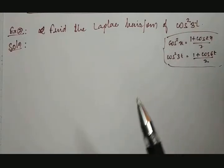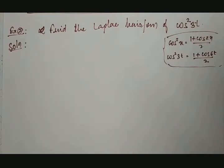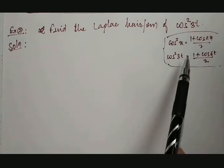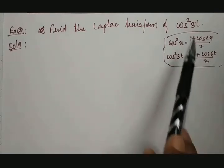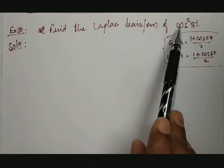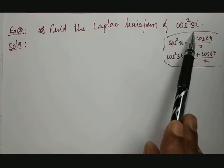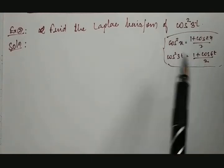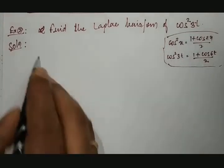You also cannot treat it as cos times cos, because for that there is no applicable rule either. Again, if you take cos times cos, we would need to use trigonometric functions anyway. So instead of that, we will use this trigonometric identity to simplify first, and then apply the Laplace transformation.